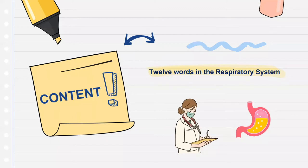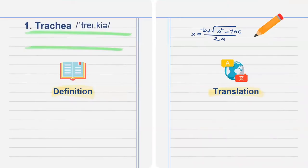There are twelve words in this presentation. First of all, we have trachea, the tube that carries air from your throat to your lungs.